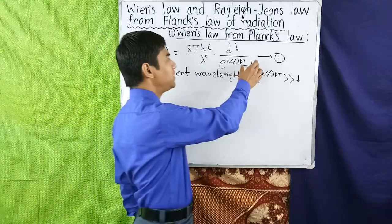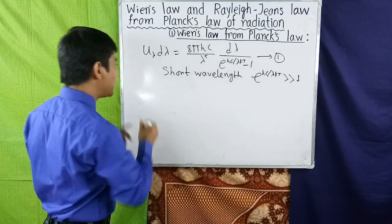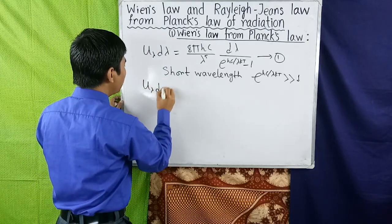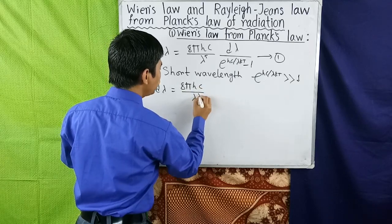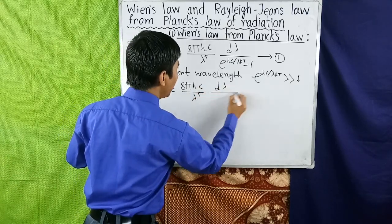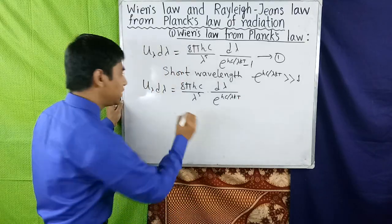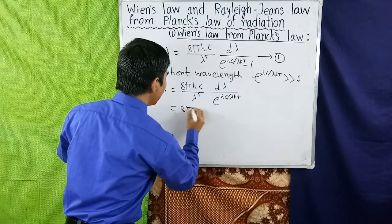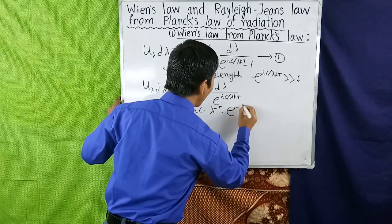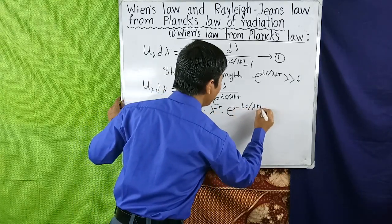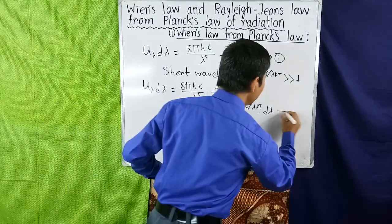So we neglect 1 in this expression, and equation 1 can be written as: u(λ) dλ = (8πhc / λ⁵) × dλ / e^(hc/λkT), which equals 8πhc × λ^(−5) × e^(−hc/λkT) dλ. Suppose this is equation 2.